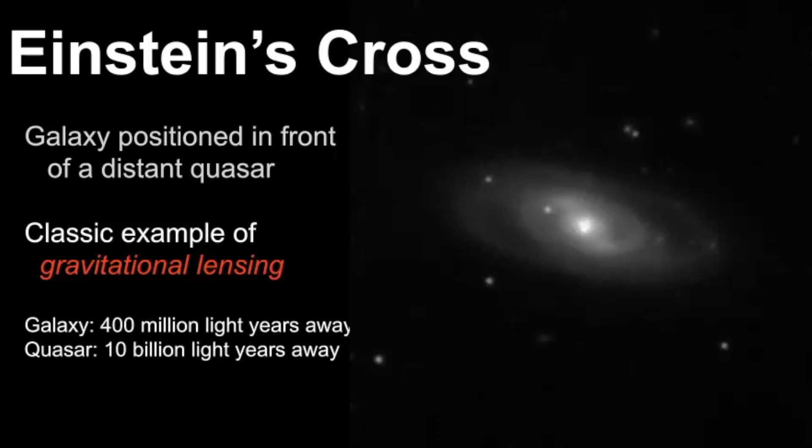So this cosmic mirage is a galaxy that is positioned in front of a distant quasar. So this here is the spiral galaxy, you can see it, but right here in the center what you should notice is that the light is broken up into different distinct points, and this is an example of gravitational lensing.